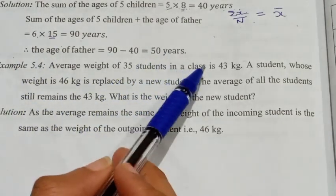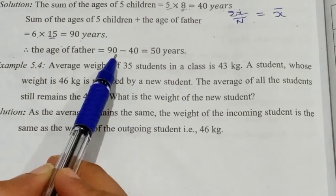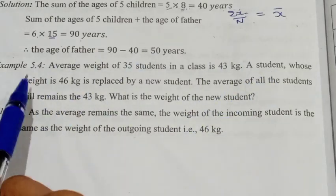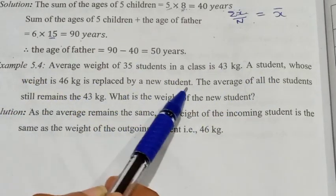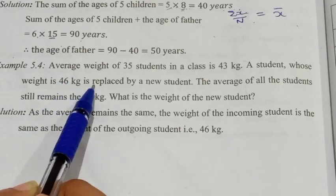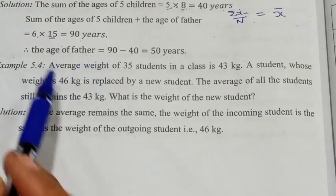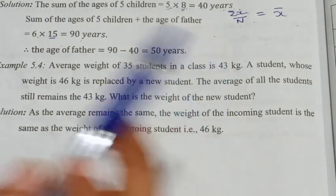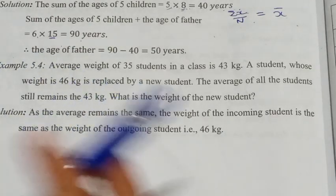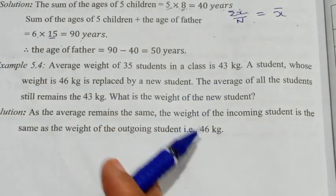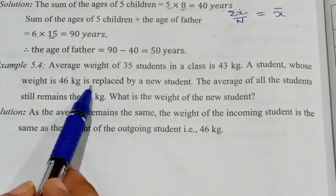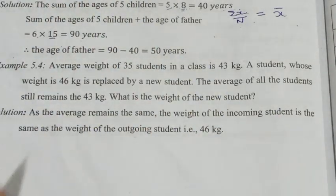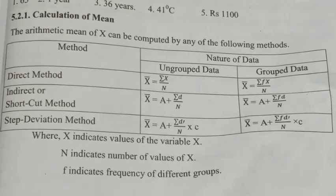The average weight of 35 students in a class is 43 kg. A student weighing 46 kg is replaced by a new student. We need to find the new average weight of 43 students. We will calculate the average weight after the replacement.